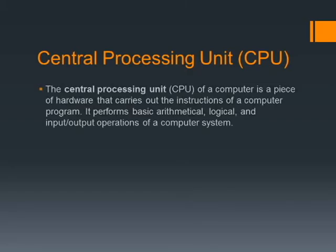Now we move to the central processing unit, or CPU — what everyone calls the brain of the computer. The CPU is a piece of hardware that carries out the instructions of a computer program. It is located within the system unit case. It performs basic arithmetic (calculations), logical operations (true/false thinking), and manages input and output. Literally, the CPU is the big boss — it controls everything, like the CEO of the computer.